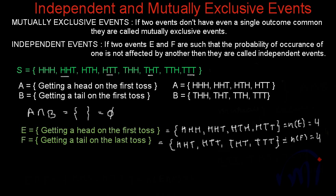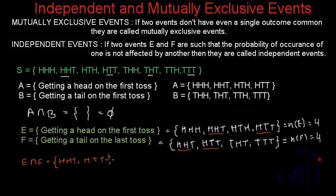These two events actually have two outcomes in common: {HHT} and {HTT}. These are the two outcomes which have a head on the first toss and a tail on the last toss. So the set E intersection F will have these two elements, and the cardinal number of E intersection F is equal to 2.